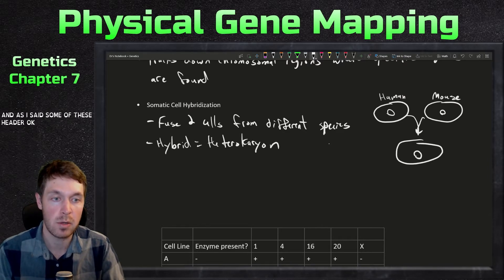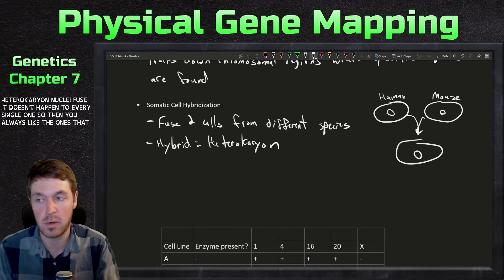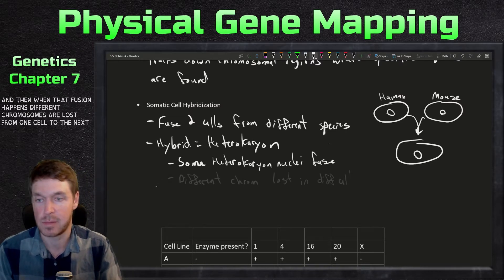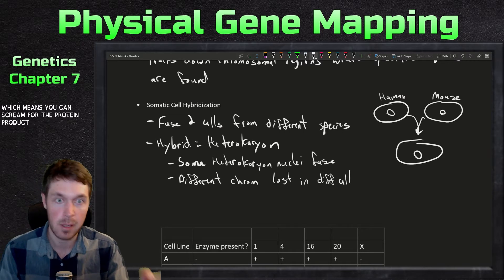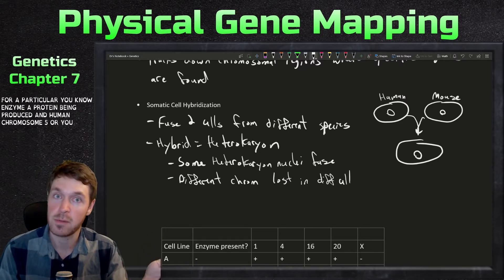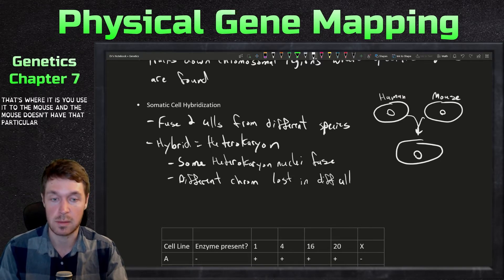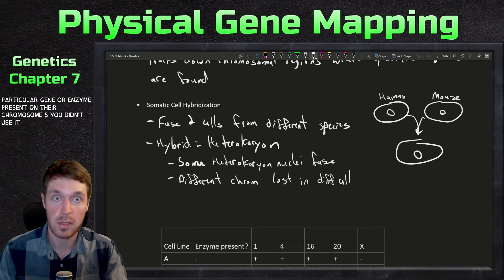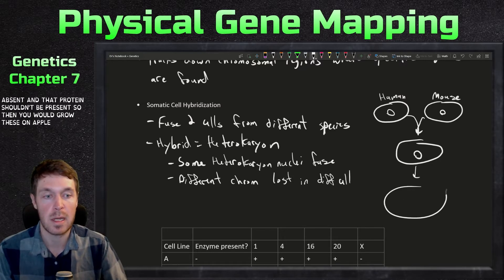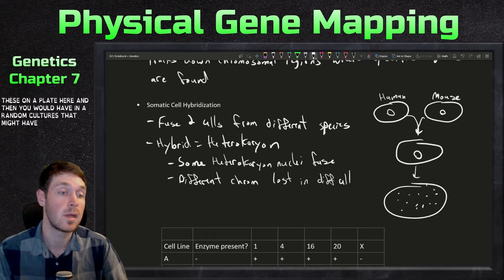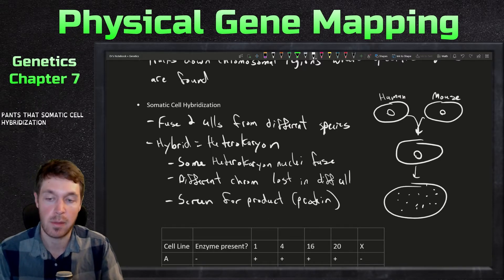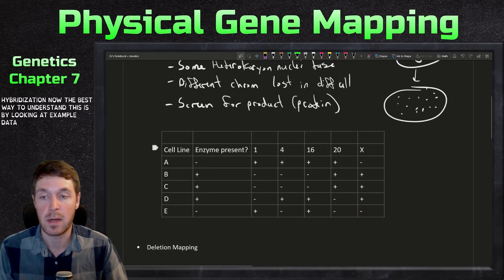Some heterokaryon nuclei fuse — it doesn't happen in every single one — so you select only those with the fusion. When fusion happens, different chromosomes are lost from one cell to the next, which means you can screen for the protein product. For example, if you think an enzyme is on human chromosome 5 and the mouse doesn't have that gene on its chromosome 5, when chromosome 5 is absent, that protein shouldn't be present. You grow these on a plate and screen cultures for expression of that protein.